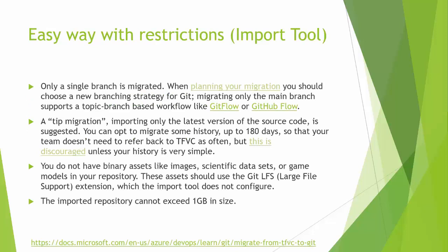There are actually two ways to do that. One is a little bit easier and it's part of TFS or Azure DevOps — it's the import tool. It's easier but it's also restricted; you can only migrate the latest one branch. You'll also need to rethink your branching strategy in Git. You can look at Git Flow or GitHub Flow. This involves a tip migration, but you can go up to 180 days of history if that's what you want.